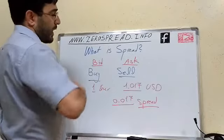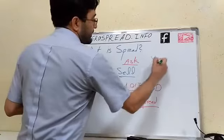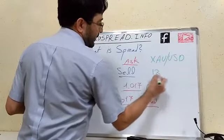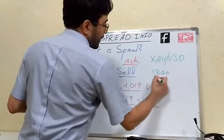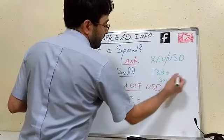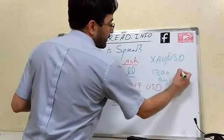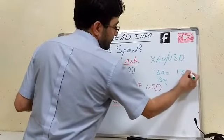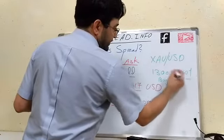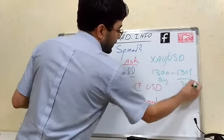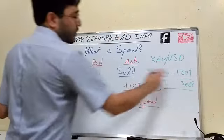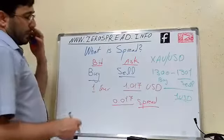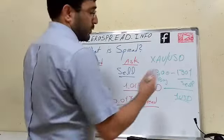In trading, for example with gold, you have a buy price of 1,300 USD, and when you want to sell it the price would be, for example, 1,300.01 — just as an example, the numbers are illustrative. So for each lot the spread here is one USD.